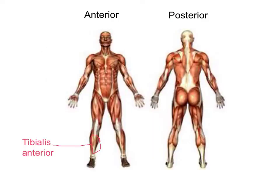Now we're going to look at the muscles on the body. We have an anterior view, which is the person facing you, and a posterior view. The first muscle we're going to look at is the tibialis anterior, which is the muscle on the front of the leg.